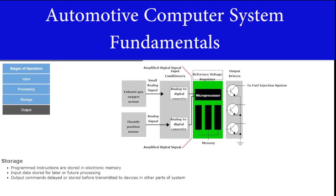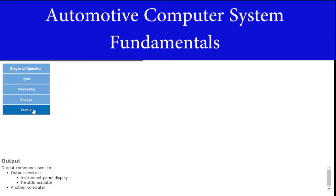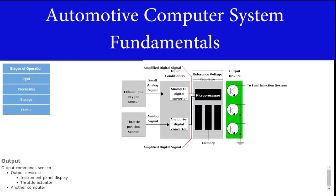A computer's programmed instructions are stored in electronic memory. Additionally, input data can be stored for later reference or future processing. Output commands may also be delayed or stored before they are transmitted to devices in other parts of the system. After the sensor signal information has been processed, output commands are sent to various output devices, such as an instrument panel display or throttle actuator. The output of one computer can also be the input to another computer.